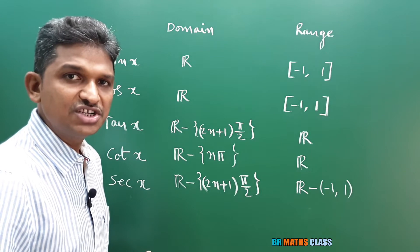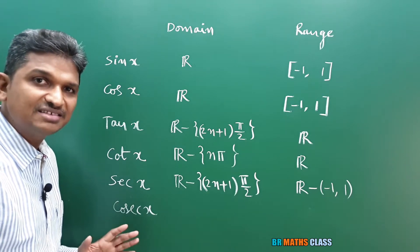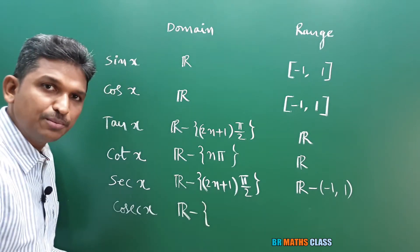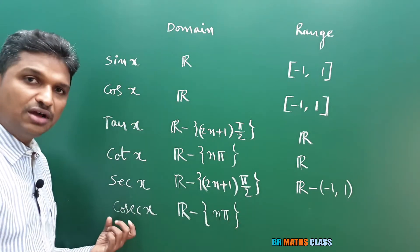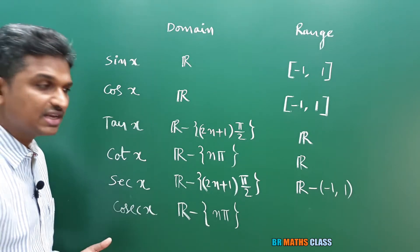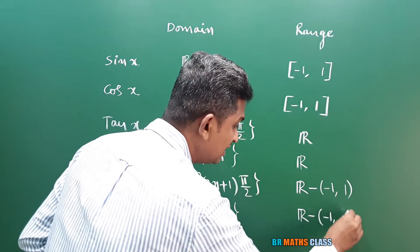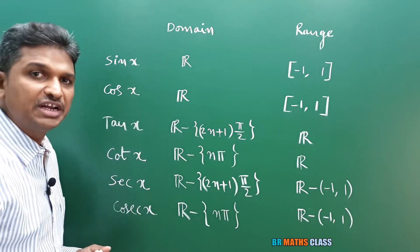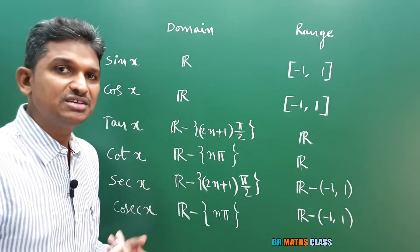Now the last trigonometric function — cosecant x. Cosecant x can be written as 1 divided by sin x. Sin x cannot be equal to 0. When sin x is 0, x equals nπ. So the domain of cosecant x is all real numbers except nπ, that is R minus {nπ}. If you observe the graph of cosecant x, the range is R minus the open interval (−1, 1). These are the domains and ranges of all six trigonometric functions, and this knowledge is compulsory to understand the upcoming problems.